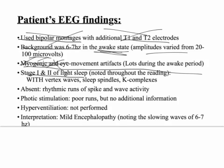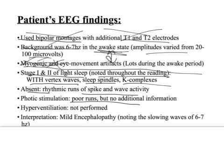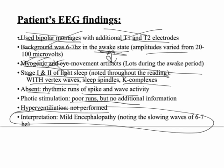Stage 1 and 2 of light sleep were noted throughout the reading with vertex waves, sleep spindles, and K-complexes. What we did not see was spike and wave activity. We saw poor photic stimulation. They did not perform hyperventilation, and the interpretation given was mild encephalopathy.